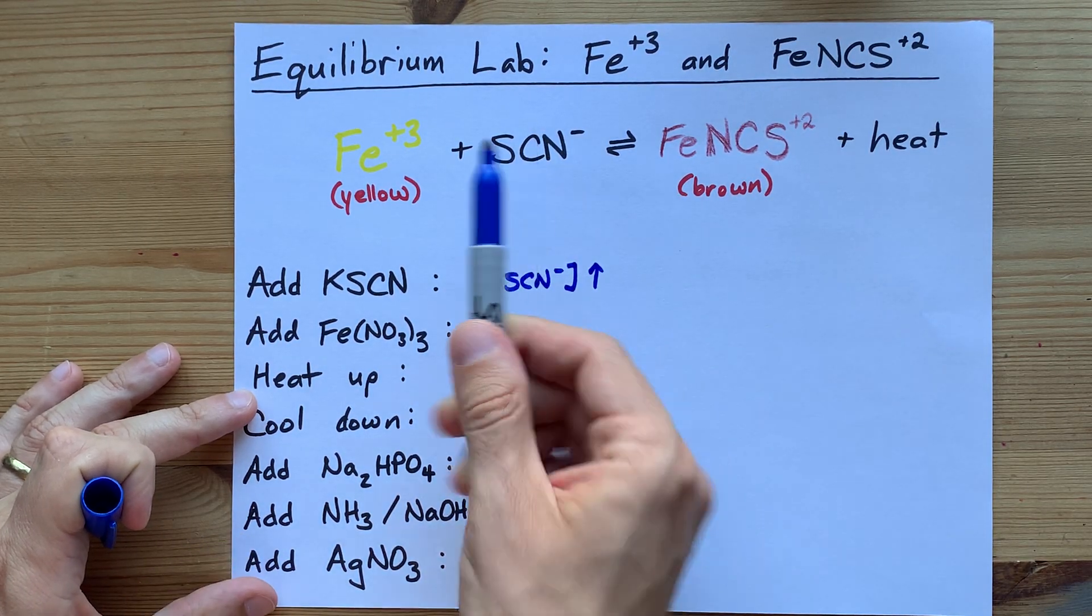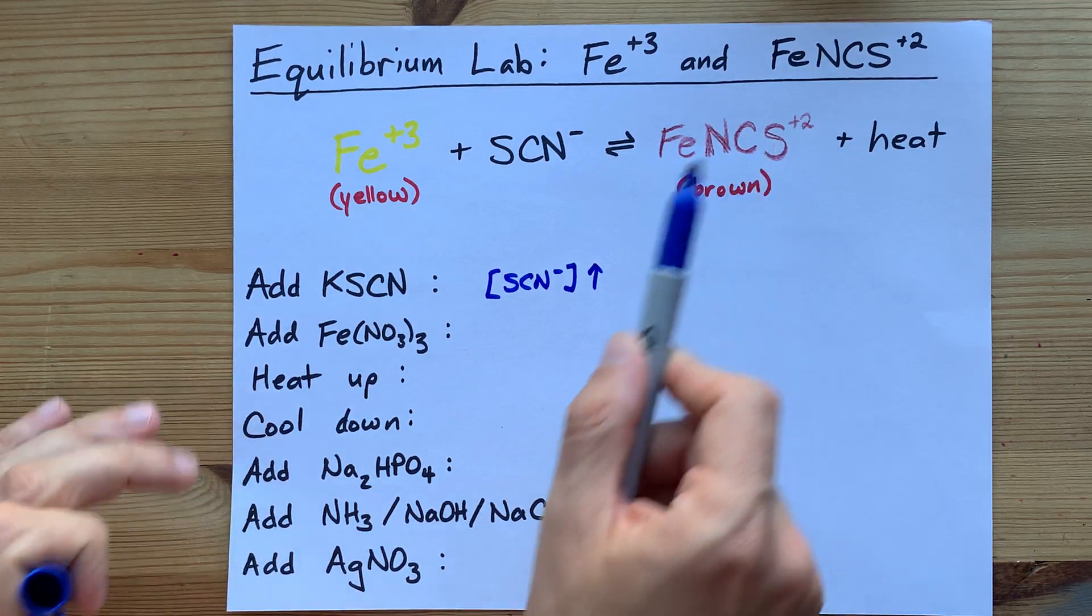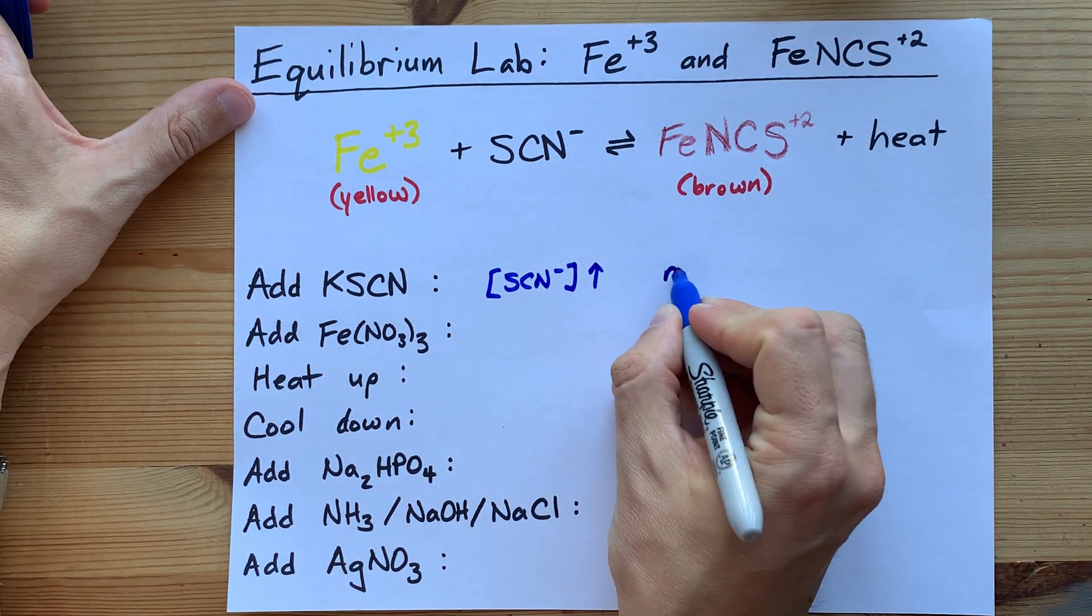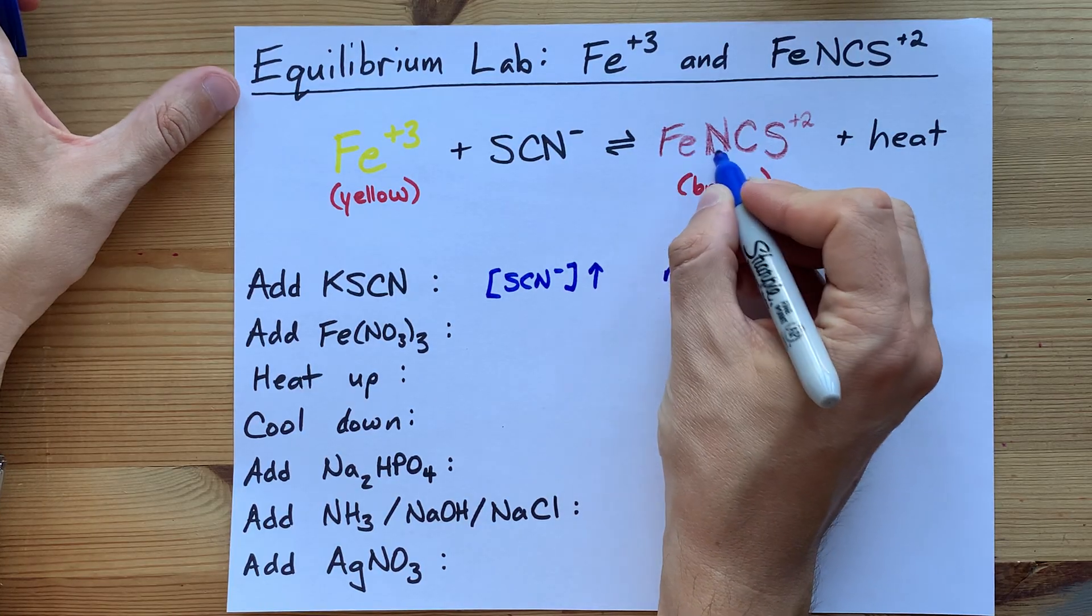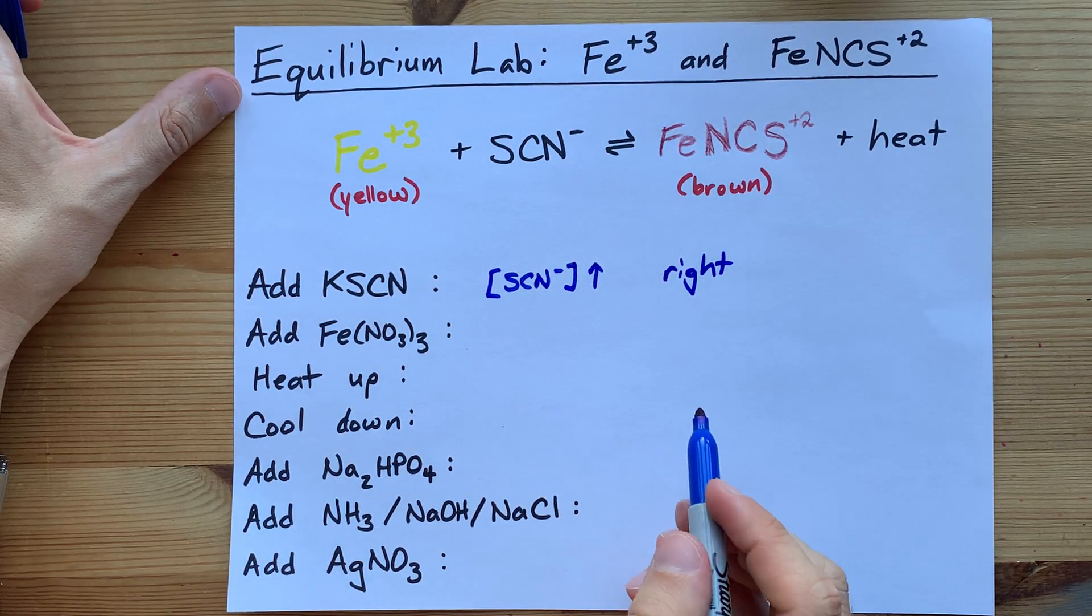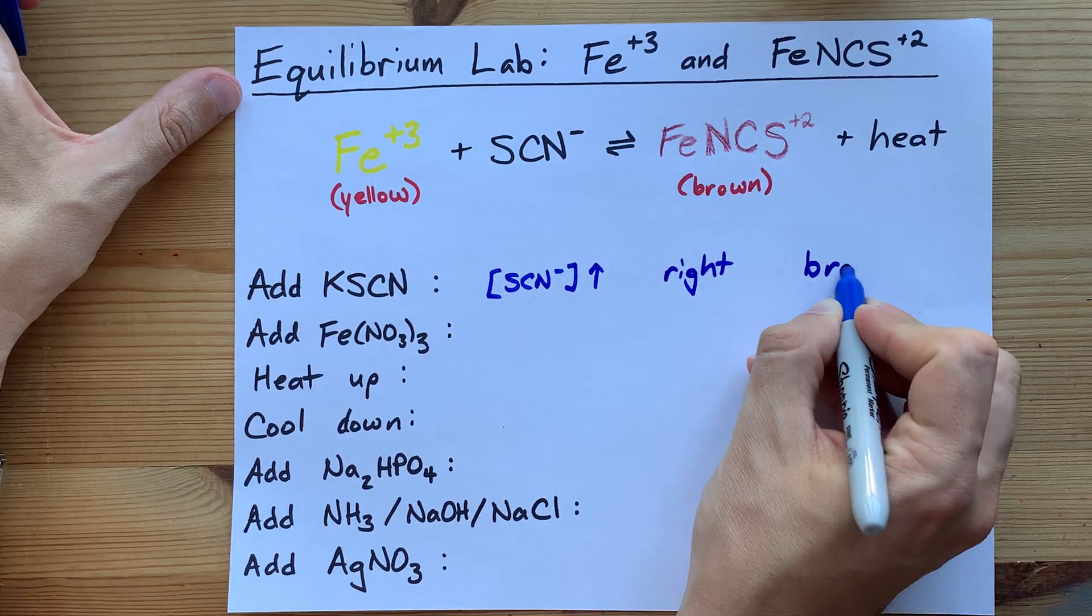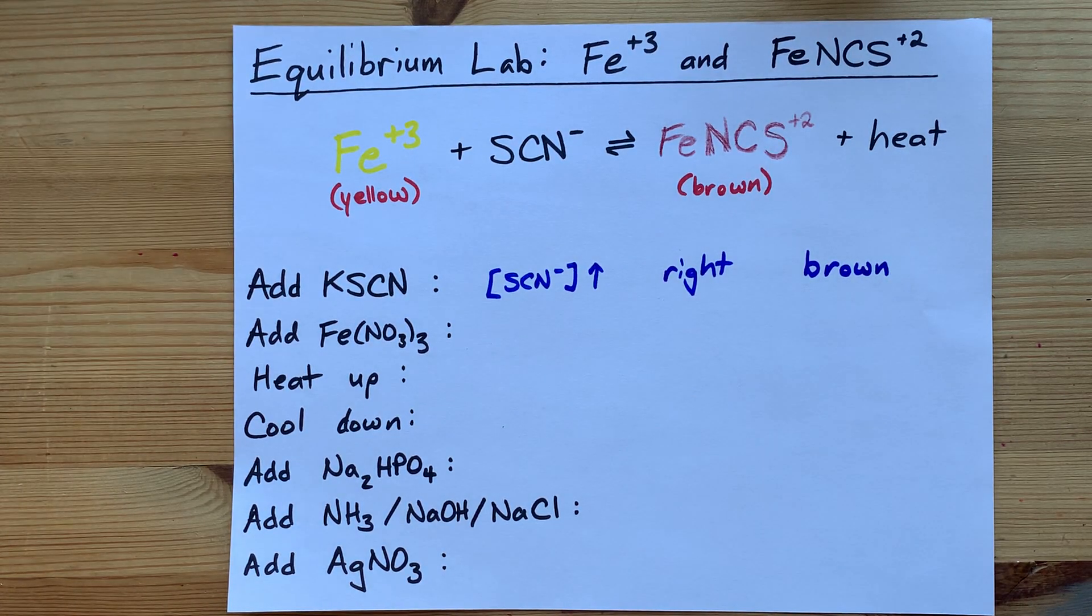Adding something to the left shifts the reaction to the right. So we're going to end up with a little bit more of the FeNCS complex, the solution itself is going to look more brown than it did.